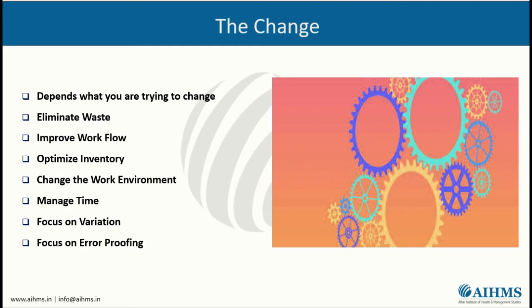There are seven change concepts. These are: eliminate waste — any activity or resource that does not add value; improve workflow of an organization; optimize inventory — ensure your work is not being held up because items are not properly organized or available; change the work environment and work culture; manage the time to do the right thing at the right time; focus on variation — identify what aspects of the system vary and make your outcomes unpredictable; and focus on error — use checklists to reduce errors.